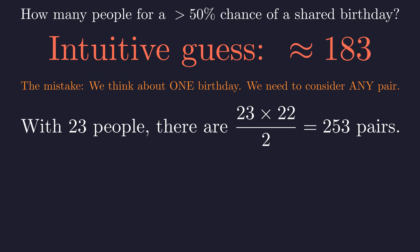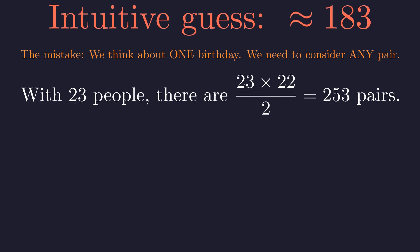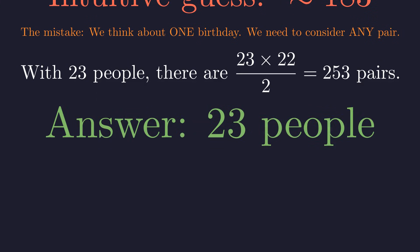With just 23 people, there are 253 possible pairs, which is a lot of opportunities for a match. The surprising answer is that you only need 23 people for the probability to be over 50 percent.